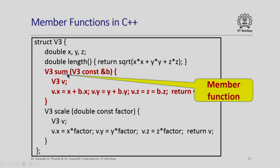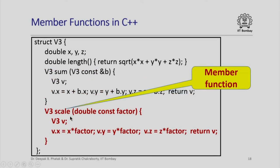Similarly, there is another member function which computes the sum of the current object — the object of which this is a member function — with another object of type V3 passed as parameter b. Within the body of the function, x refers to the member x of the current object, and b.x refers to the member x of the parameter b, and similarly for y and z. A third member function scales the members x, y, and z of the current object by the parameter factor.